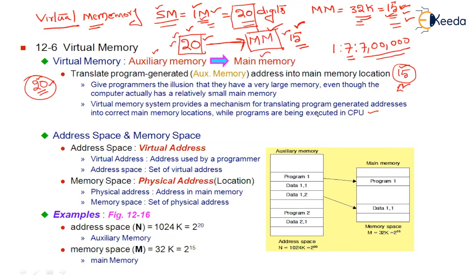Before we get into the details, let us identify the key terms we need to understand. In this session, we are going to identify these terms. We need to understand what an address space is, what a virtual address is, what a memory space is, what a physical address is, and two more terms: page and block. We will cover these in the very next session.